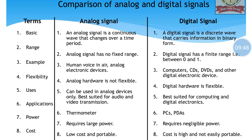Analog signals can be used in analog devices only and are best suited for audio and video transmissions. For computing and digital electronics, you should use digital signals. A thermometer uses analog signals, and PCs and personal digital assistants use digital signals. Analog requires large power; digital requires negligible power. As far as cost is concerned, analog signal is cheaper. Digital signal cost is higher and it is not usually portable. These are factual data points regarding analog and digital signals — remember 4 to 6 points.